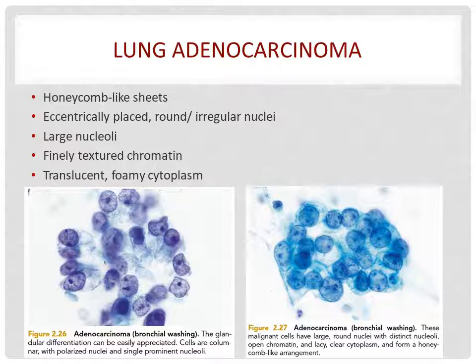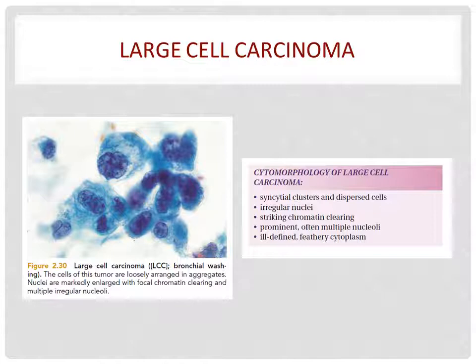Here is the image of poorly differentiated squamous cell carcinoma of the lungs. The carcinoma may retain characteristics of well-differentiated squamous cell carcinoma; however, some neoplasms are undifferentiated and less distinct. The nuclei are larger and nucleoli are prominent. Next is lung adenocarcinoma. The cells are usually arranged in a honeycomb arrangement. The nuclei are eccentrically placed, round or irregular. They have large nucleoli and finely textured chromatin, and the cytoplasm is translucent and vacuolated. Honeycomb arrangement can be seen in lung adenocarcinoma.